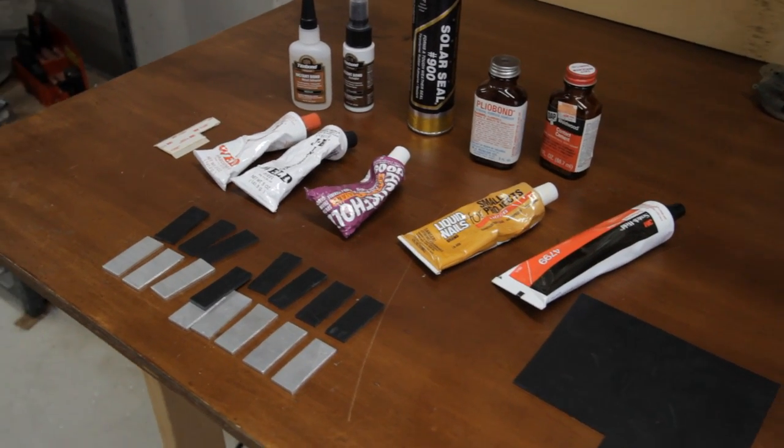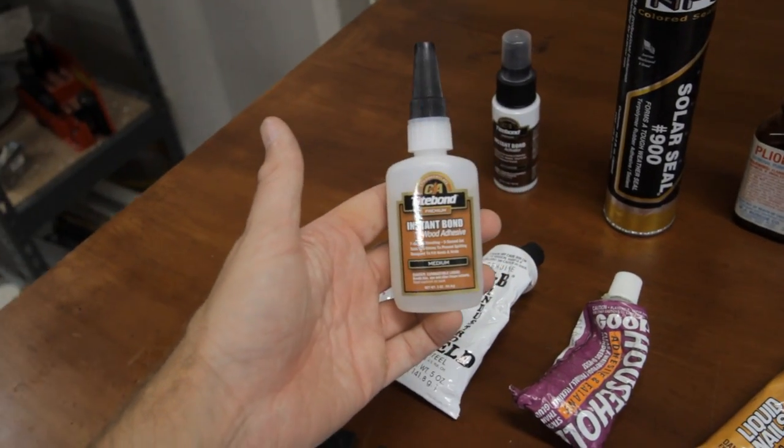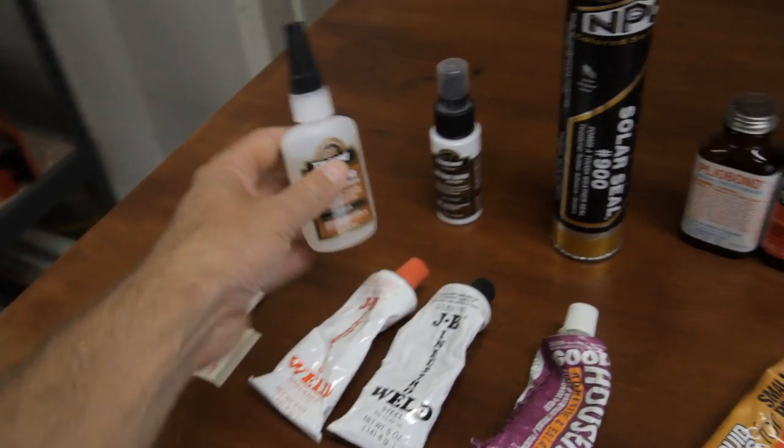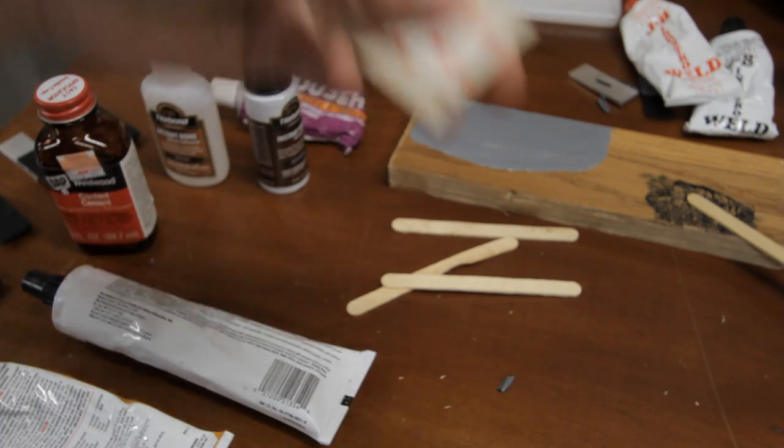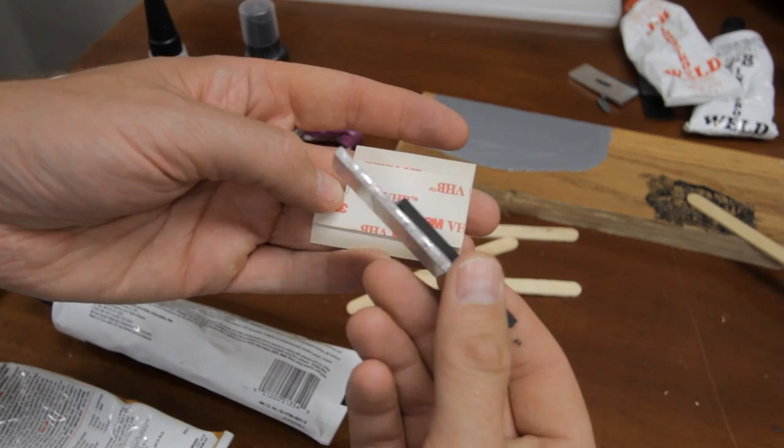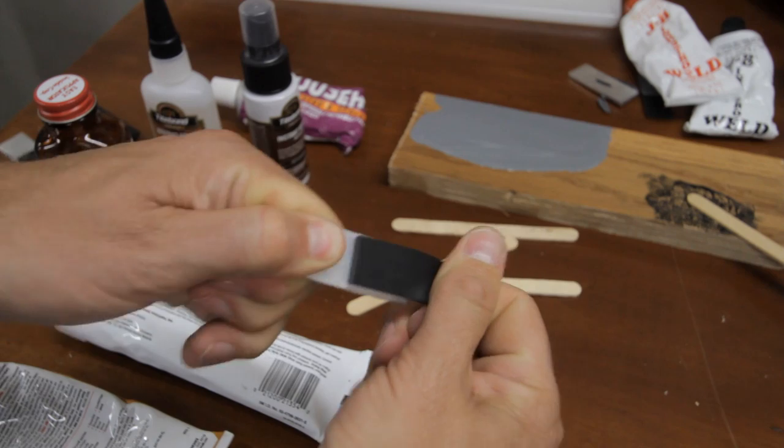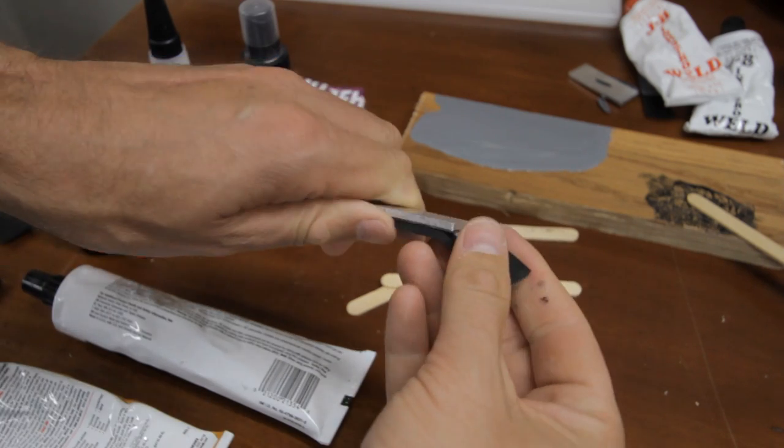So which glue did I choose for my motorcycle kickstand? CA glue is pretty strong, but a little too brittle. I chose the 3M VHB double-sided tape. Why? Well, it was strong enough and more important to me, I can replenish it anytime I need to, and it just doesn't make a mess.